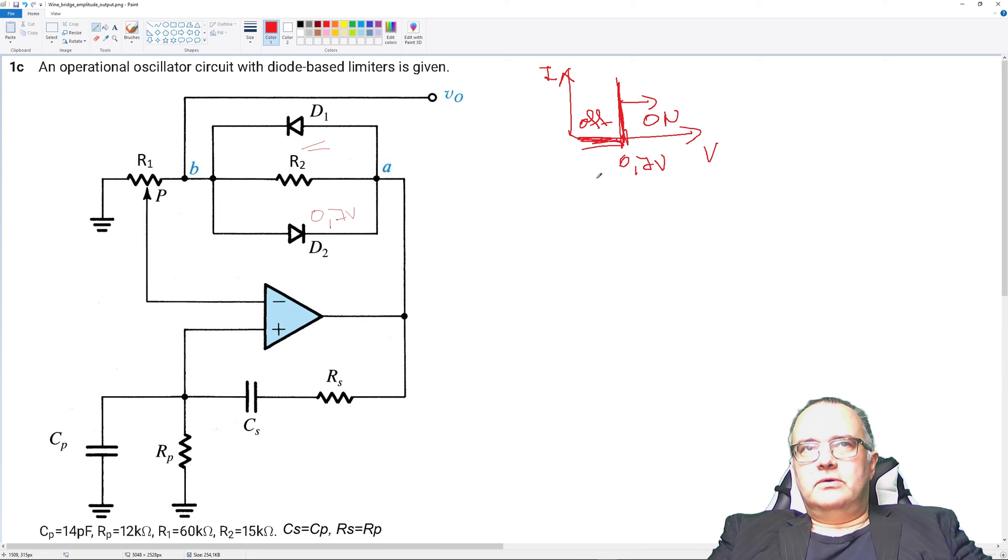So what they do actually is that they short this resistor R2. By shorting the resistor R2, the gain of the oscillator drops and the amplitude of the oscillation decreases.